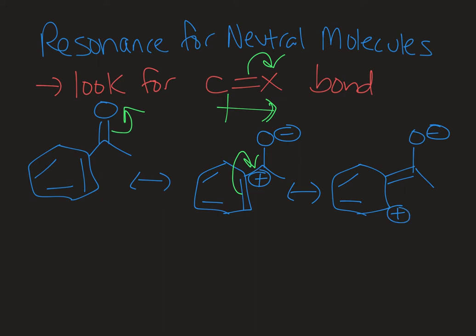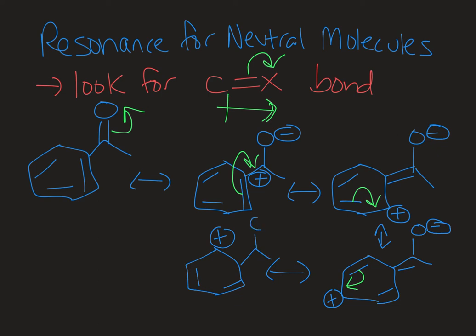This carbon would be positively charged. Now the pair of electrons in the pi bond next door to it can fold down, and that will form this structure. Again, the pi bond that's adjacent to the newly formed carbocation can fold in, and that gives us this structure.